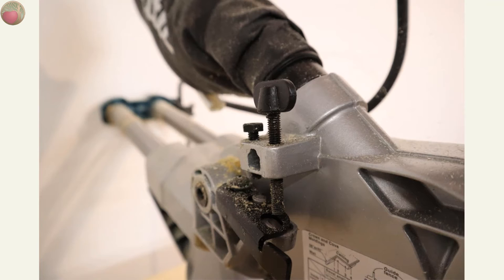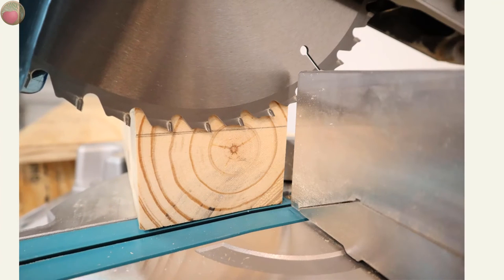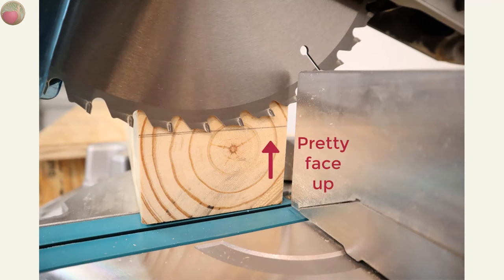Most miter saws have a cut depth adjustment. Here's where it is on my 10-inch Makita Compound Sliding Miter Saw. You simply flip the metal piece outward and then use the screw to adjust the cut depth. Then I placed the 4x4 pretty face up on the miter saw and used the line I had drawn to ensure my blade depth was correct.